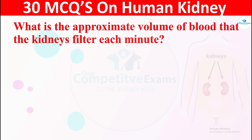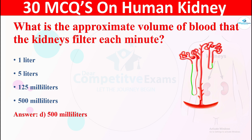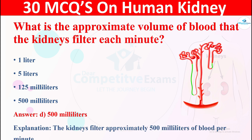Question 5: What is the approximate volume of blood that the kidneys filter each minute? The options are: A) 1 litre, B) 5 litres, C) 125 ml, or D) 500 ml. The correct answer is 500 ml. The kidneys filter approximately 500 ml of blood per minute.